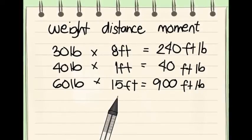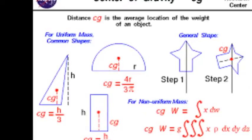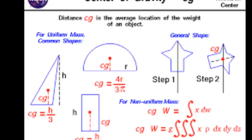This is the point where the object is in perfect balance, no matter how turned or rotated around that point. If you want to know how to calculate the center of gravity of an object,